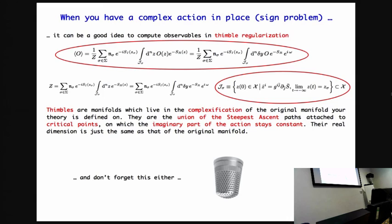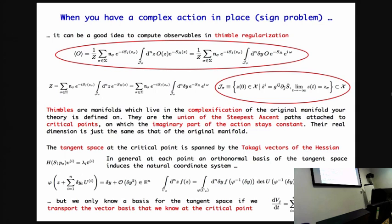What's the manifold? It's something that locally looks like R^n. What does locally mean? That in principle you should know the tangent space at each point, and then in terms of that tangent space, you can parametrize each point on the thimble in terms of that natural basis. You know that coordinate and that basis at the critical point, because the tangent space is spanned by what are called the Takagi vectors of the action of the theory.